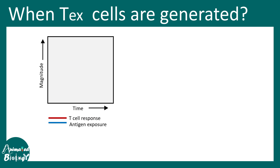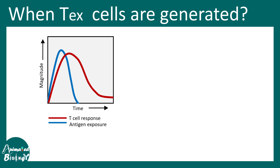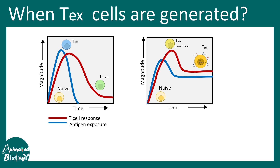This is how the T cell response looks. You can see the antigen exposure shown in blue, and the T cell response mirrors it with a slight offset. During a normal immune response, we start with a naive T cell, then at the peak of infection, T effector cells are produced. When the infection is cleared, some of them remain as T memory cells.